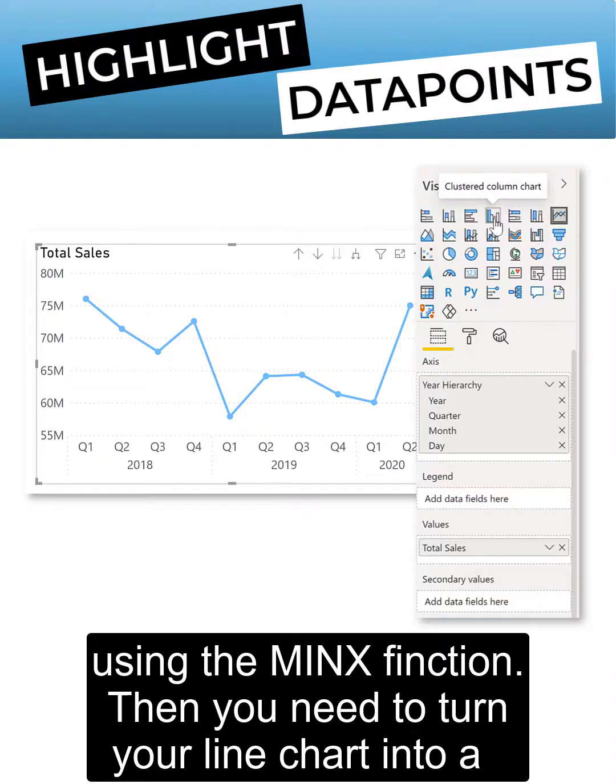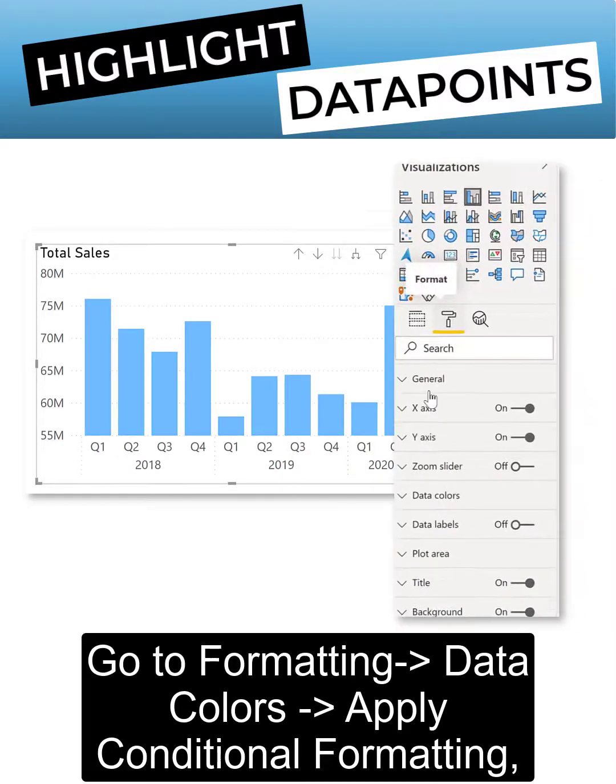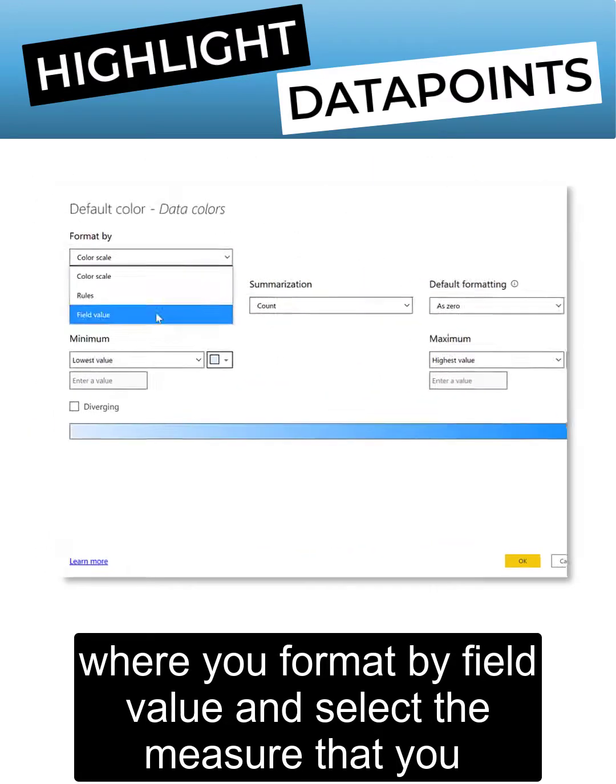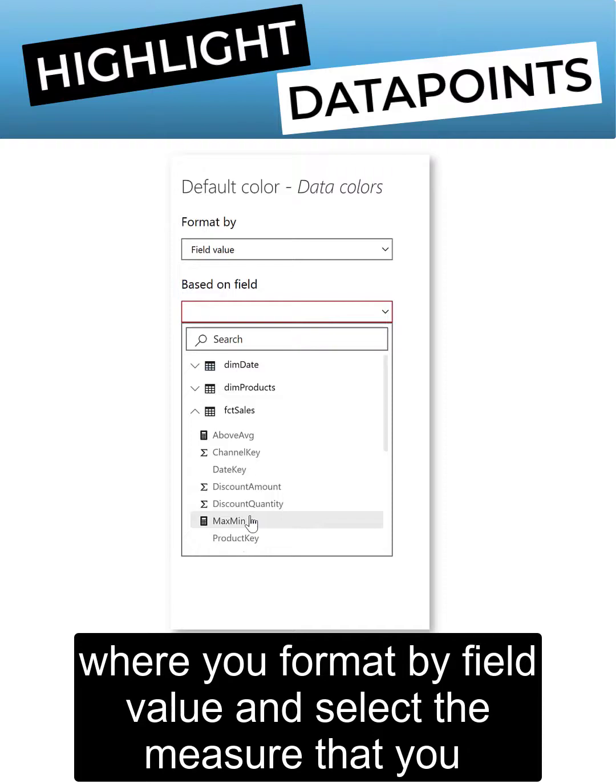Then you need to turn your line chart into a bar chart. Go to formatting, data colors, and apply conditional formatting where you format by field value and select the measure you just created.